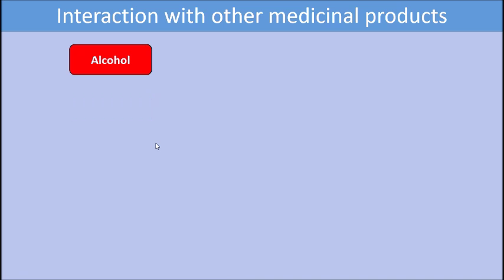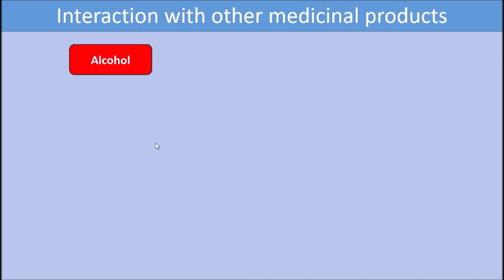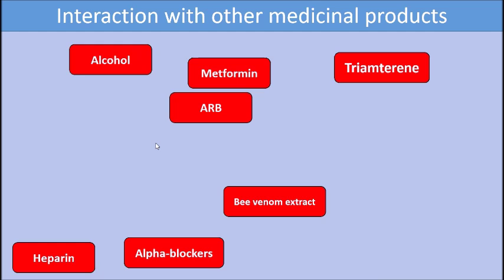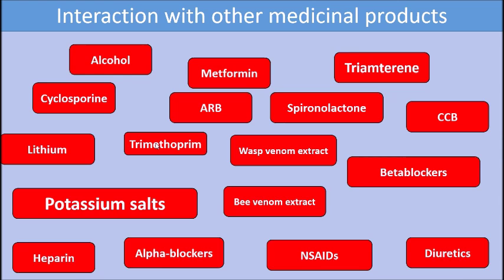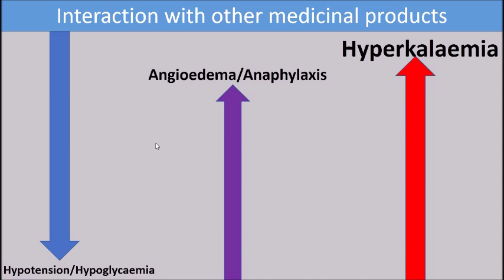ACE inhibitors have many interactions — over 30 to 40 — including drugs like metformin, diuretics, and others, making them difficult to remember all at once. An easier method is to remember three or four categories of interactions. If you remember that ACE inhibitors increase blood potassium concentration, carry a risk of angioedema and anaphylaxis, and carry a risk of hypotension or hypoglycemia, you can think logically about which drug combinations are dangerous.